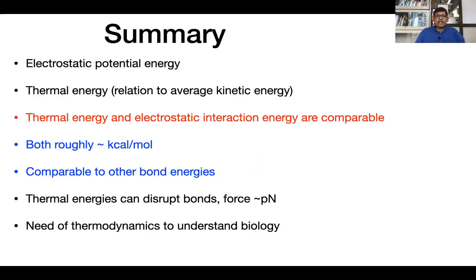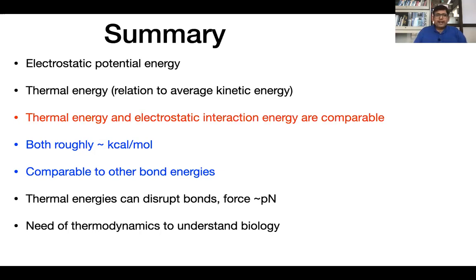To summarize: we talked about electrostatic potential energy and thermal energy — related to the average kinetic energy of molecules in the medium. Thermal energy is comparable to electrostatic interaction energy, both of the order of ~1 kcal/mol, and also comparable to hydrogen bond energies. Thermal energy can disrupt some bonds, forces are of the order of piconewtons, and we require a branch of science called thermodynamics or statistical thermodynamics to understand this competition between thermal energy and other energies — which is very crucial for biology. We will come back and learn more in the coming lectures.